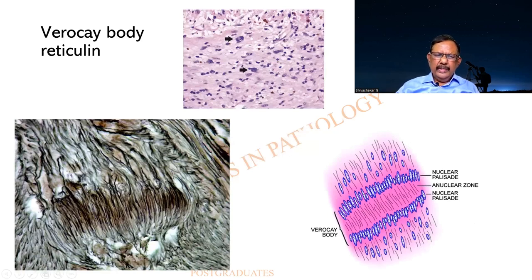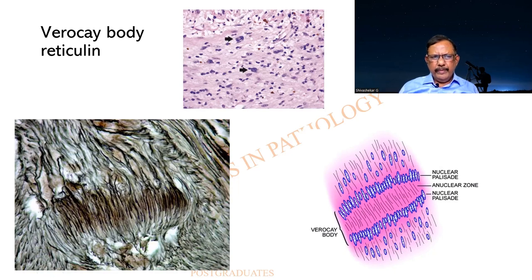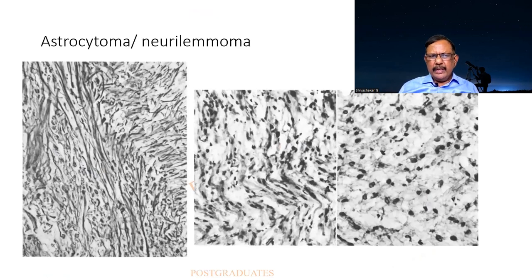Yet another use: there is a Verocay body here with a palisading arrangement of nuclei. Always in a schwannoma, there is a cellular and an acellular area — the cellular area is what we see on either side, and there will be a relatively acellular area where there are sparse lymphocyte-like cells dispersed. Look at the excellent reticulin framework that has been brought about by this stain. Sometimes there can be an astrocytoma having a similar picture, and it will be difficult to make a diagnosis of whether it is an astrocytoma or a schwannoma — both can occur in the brain. And the reticulin brings out the framework — the diagnosis of schwannoma.